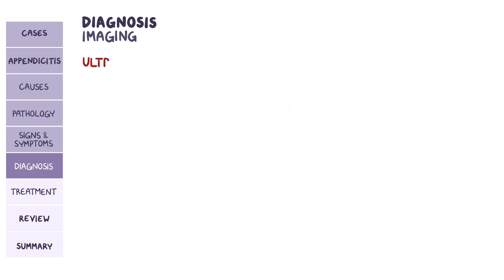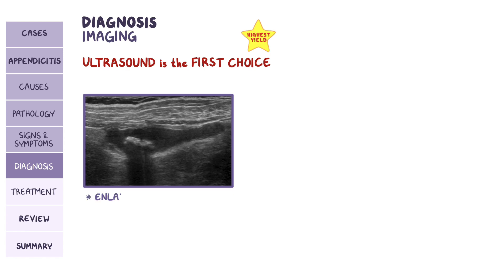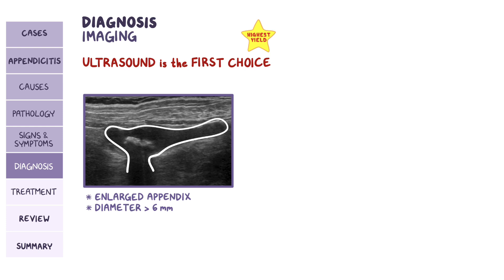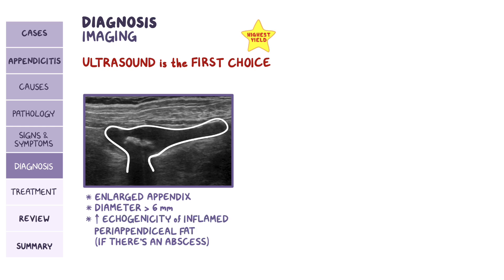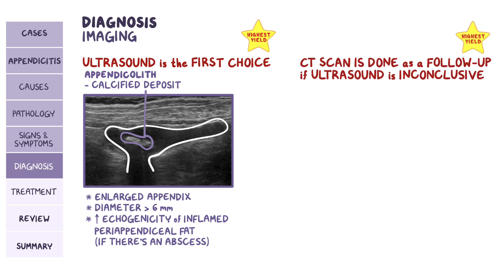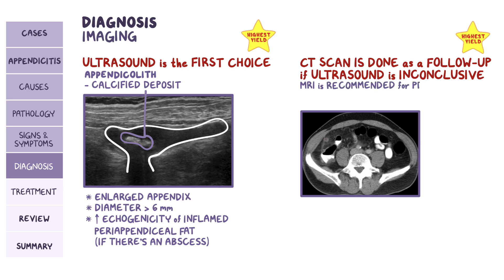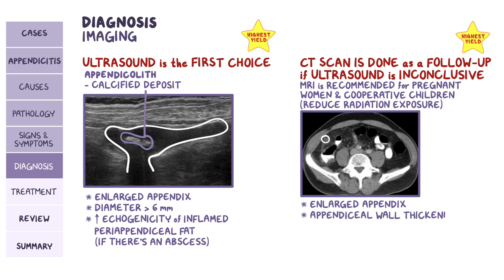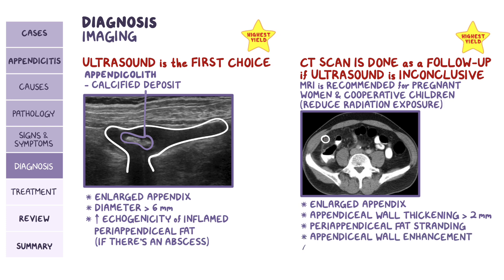When it comes to imaging, ultrasound is the first choice. It usually shows an enlarged appendix with a diameter of more than 6 mm, as well as tenderness over the appendix with compression of the ultrasound probe. If there's an abscess, there may be increased echogenicity of inflamed peri-appendiceal fat. In severe cases, there may be an appendicolith, which is a calcified deposit within the appendix. A CT scan is done as a follow-up if the ultrasound is inconclusive. MRI is recommended over CT in pregnant women and children who can cooperate to minimize radiation exposure. Common findings include an enlarged appendix, appendiceal wall thickening of more than 2 mm, peri-appendiceal fat stranding, appendiceal wall enhancement, and there may also be evidence of an abscess.